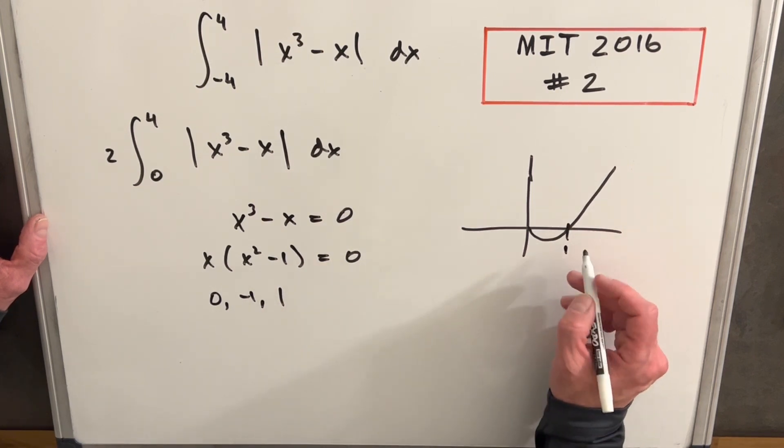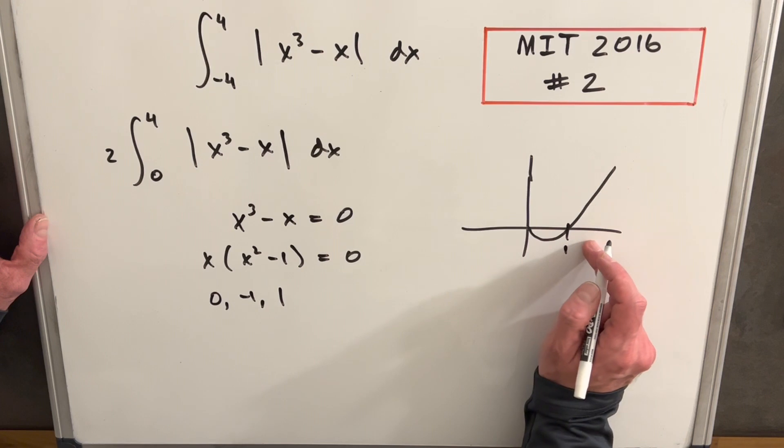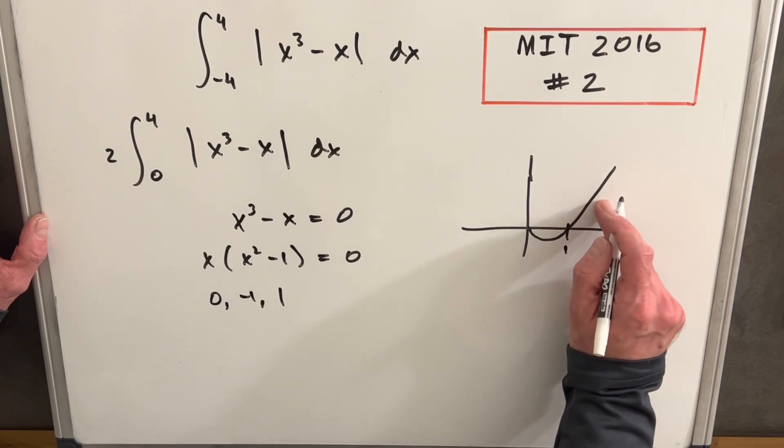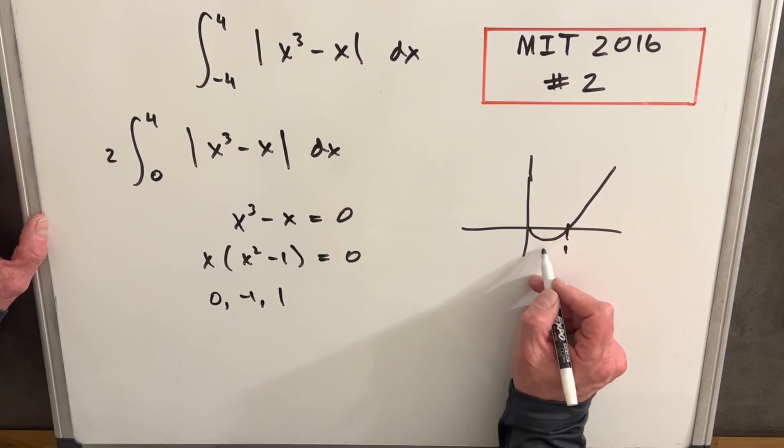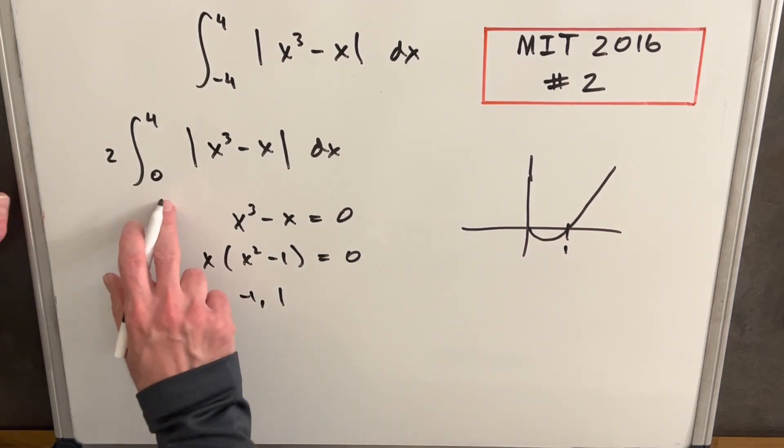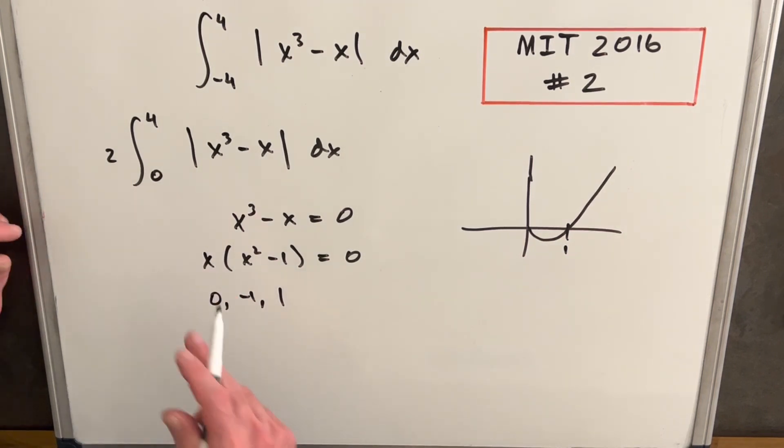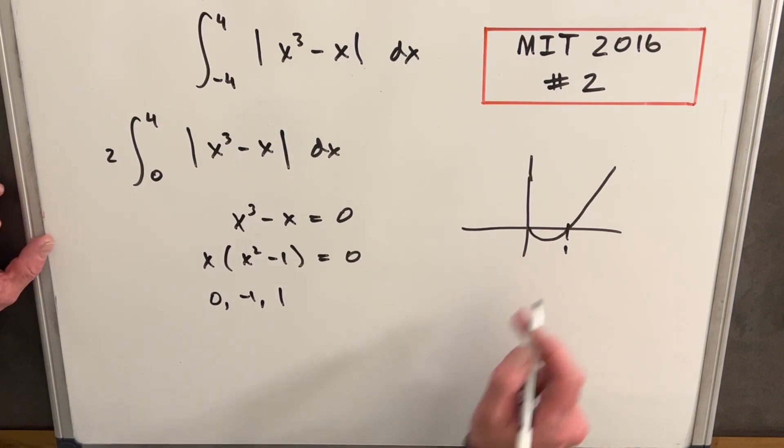So what happens is everything one and greater is going to be greater than zero. But everything between zero and one is going to be negative. So what I'm going to do is break this integral up and we'll break it up around this point at one.